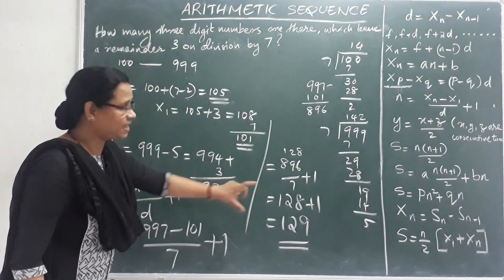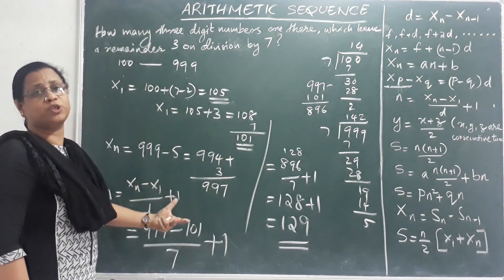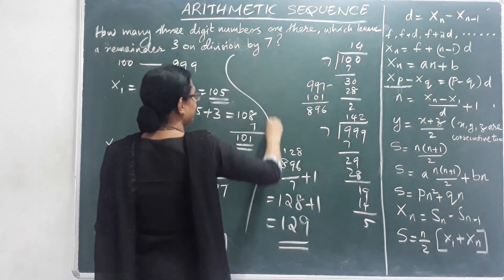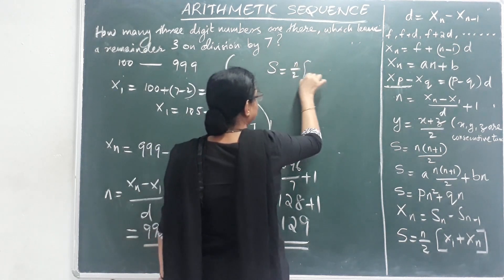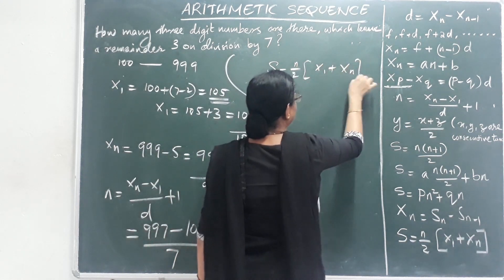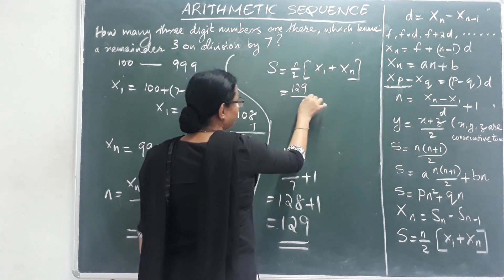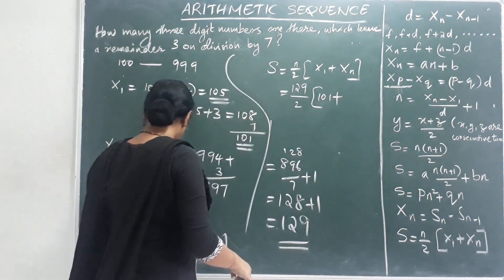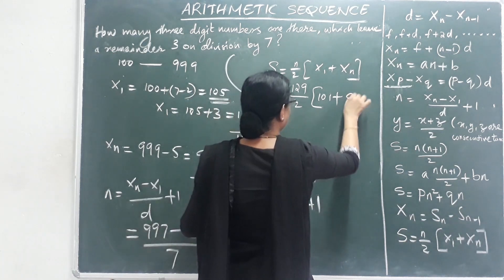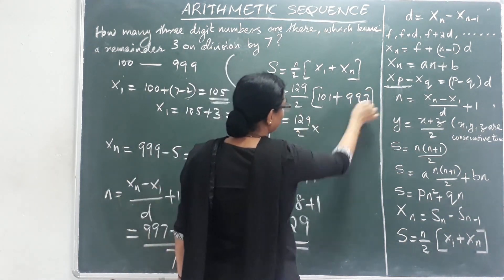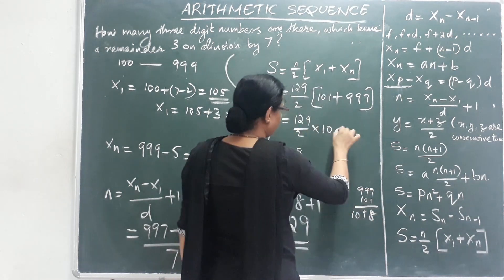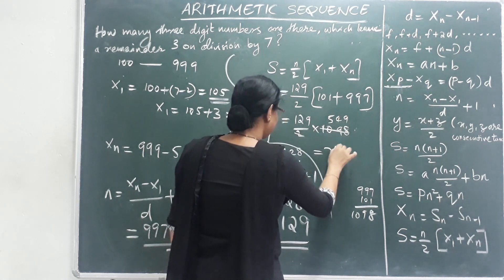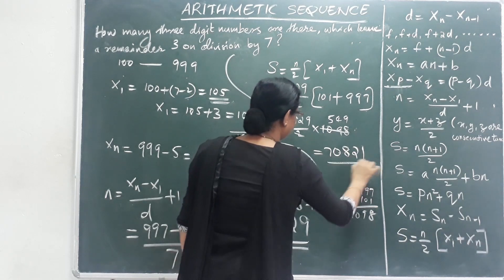If the question asks to find the sum, we use the formula: S equals n by 2 into x1 plus xn. This formula is used to find the sum of an arithmetic progression.